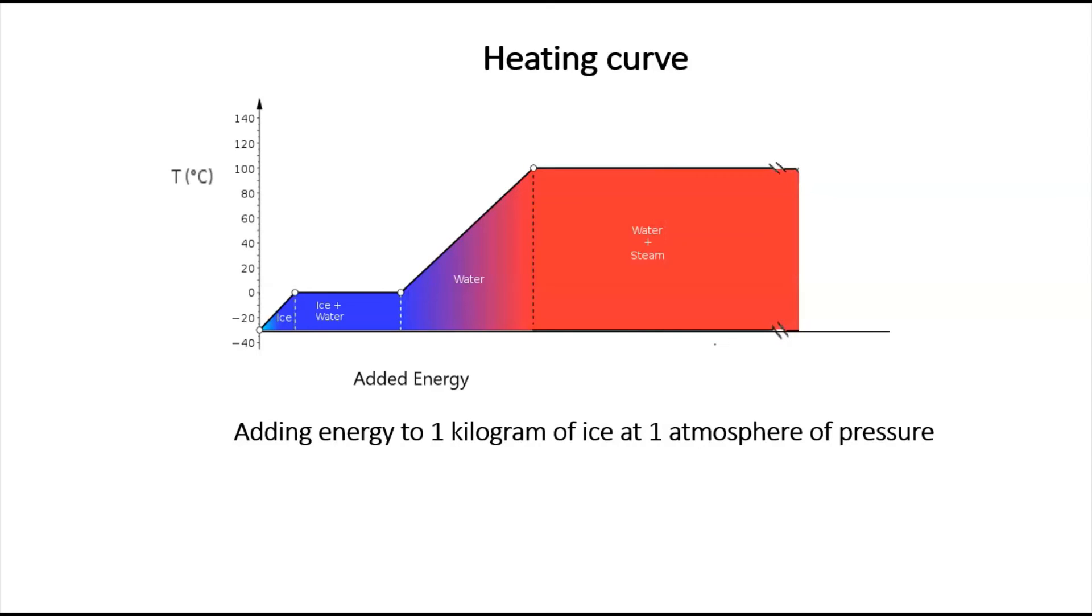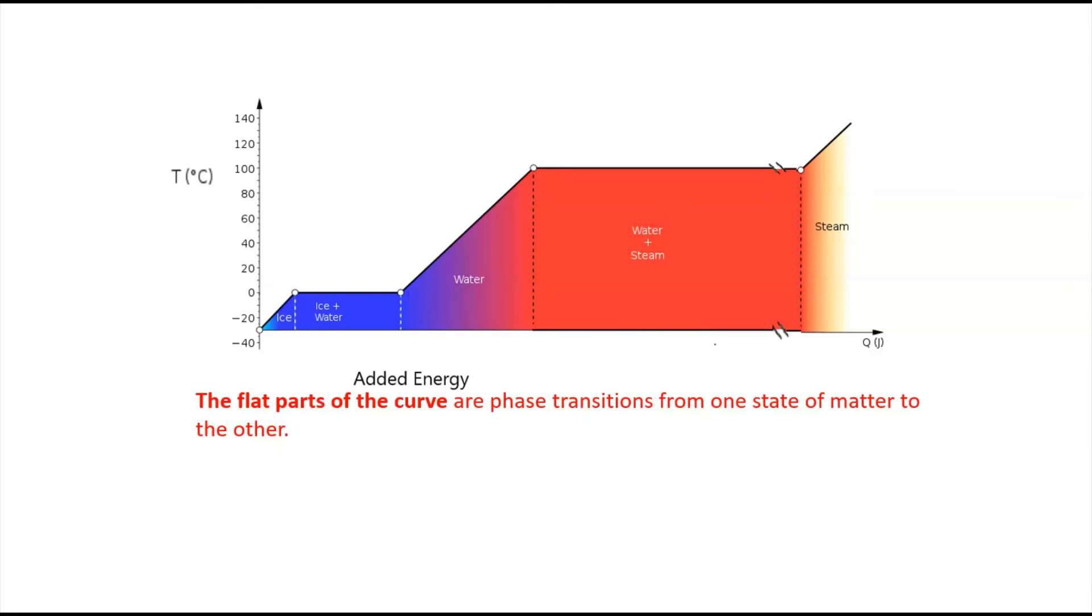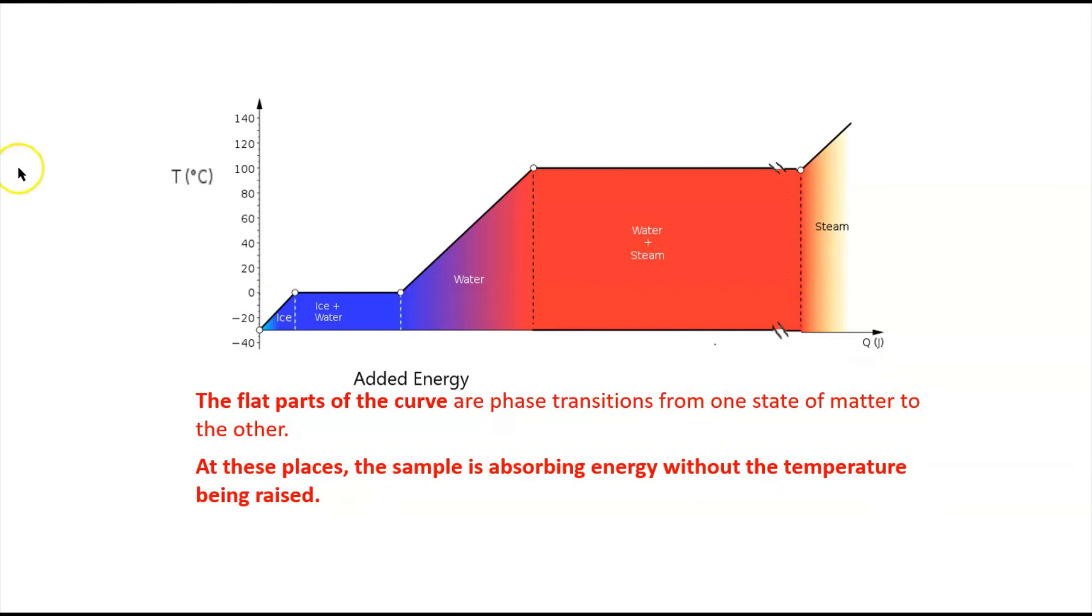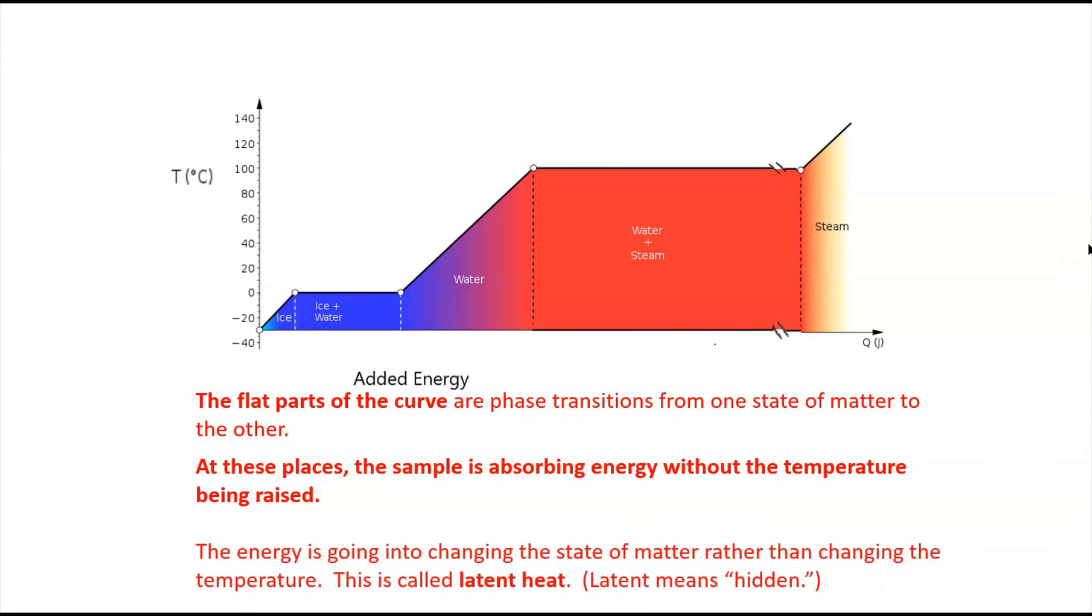Which is it will flatten out again because the energy that's being added is being used to change the state of matter instead of to increase the temperature, and so we get a similar flattening out of the curve. So we continue and we continue up until the last little bit of water is turned into steam, and then when we're adding more energy, because, again, this whole thing is continuously adding energy, then we get an increase in temperature. So this is a little bit surprising how this happens. So to sort of summarize this, the flat parts of the curve are phase transition from one state of matter to the other. At these places, the sample is absorbing energy without the temperature being raised, and as I said, the energy is going into changing the state of matter rather than changing the temperature, and that's called latent heat. And again, latent means hidden.